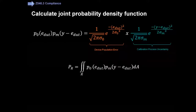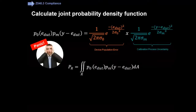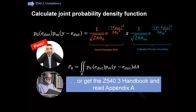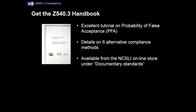There are methods where you can calculate the probability of false acceptance by looking at the probability density function and doing a double integral over the region of interest. When I first read this standard on behalf of Agilent, I had no idea how we were going to meet it. But several years later it's much better, because now you have the Z540.3 handbook. I particularly recommend Appendix A. If you're new to it, go straight to Appendix A. The handbook has an excellent tutorial on the probability of false acceptance and details on six alternative compliance methods, any one of which can be used to comply. There's even a Method 7 that people are working on, but the handbook gives you six choices. It's available from the NCSLI online store.